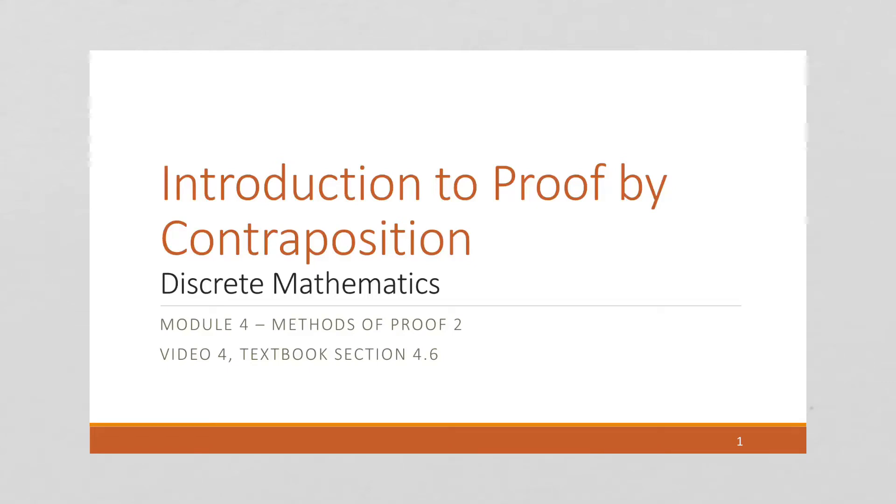Module 4 is about indirect proofs. We've seen proofs by contradiction, but another type of indirect proof is via contraposition. So that's what we're going to be introducing in this video.